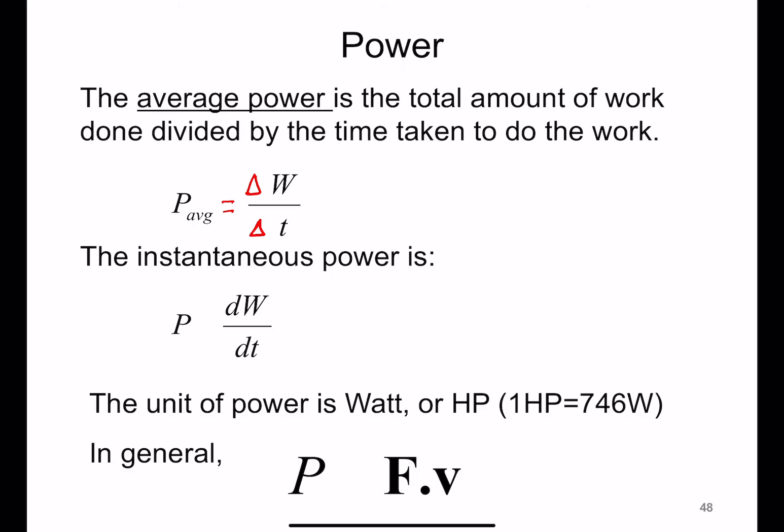Now sometimes it's convenient to talk about instantaneous power. Instantaneous power, as you can probably guess from the name, is the power at one particular instant of time, not over a large interval Δt, but at one particular instant. So how do we define the instantaneous power? It's just the same way other instantaneous quantities are defined.